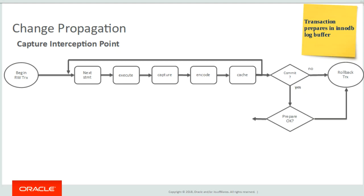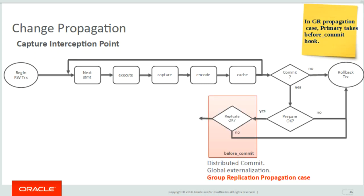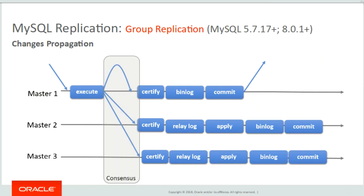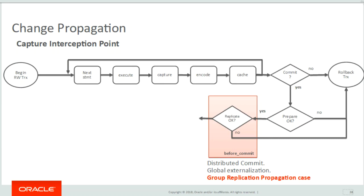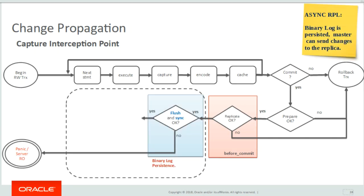Upon rollback, the cache gets removed and nothing remains to be flushed. Upon commit, the transaction enters the prepare stage — if not OK, the transaction gets rolled back; else it proceeds to the flush stage. In a capture flow where group replication is in use, before the commit hook is taken by the primary member before the flush stage, and it waits for certification from the rest of the members in the group. If not OK, the transaction gets rolled back; else it proceeds to the flush stage.